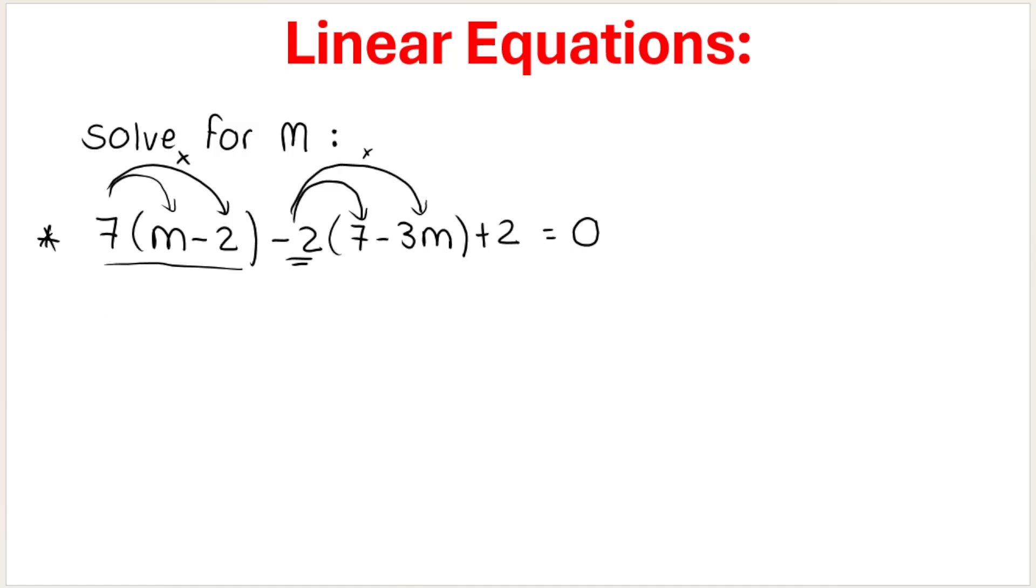Just keep reminding yourself you're multiplying. I see a lot of students making a mistake where they accidentally think that they are adding. You are multiplying into brackets. Very, very important. So negative 2 multiplied by 7, negative 14, negative 2 multiplied by negative 3m, positive 6m, and then carry the plus 2 down.